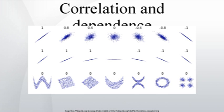Correlation Matrices. The correlation matrix of n random variables x1, …, xn is the n×n matrix whose (i, j) entry is cor(xi, xj). If the measures of correlation used are product moment coefficients, the correlation matrix is the same as the covariance matrix of the standardized random variables xi/σxi, for i = 1, …, n. This applies to both the matrix of population correlations, in which case s is a population standard deviation, and to the matrix of sample correlations, in which case s denotes the sample standard deviation. Consequently, each is necessarily a positive semi-definite matrix. The correlation matrix is symmetric because the correlation between xi and xj is the same as the correlation between xj and xi.